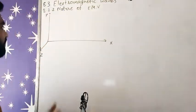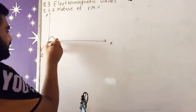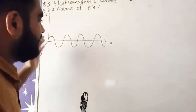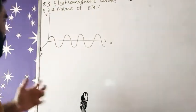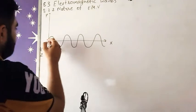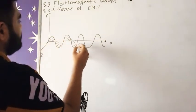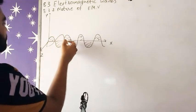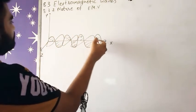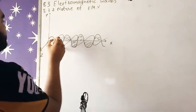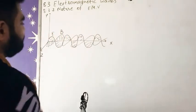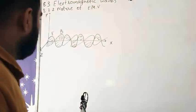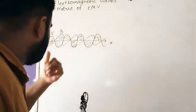So here, electromagnetic waves ka jo electric field hai, wo zero se start karega aur uske jo oscillations hai wo y direction mein. But uska jo propagation hai wo x direction mein hai. Now this wave which is propagating in x direction, similarly magnetic field B will propagate in x direction.